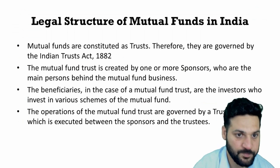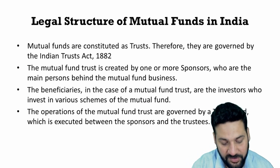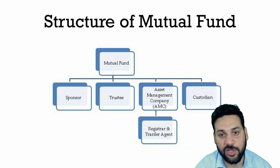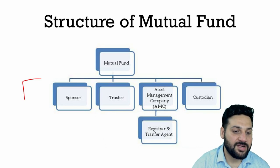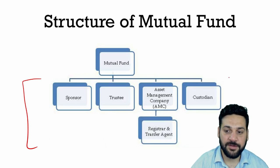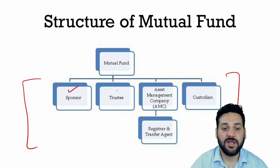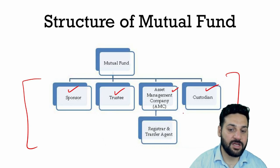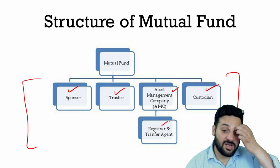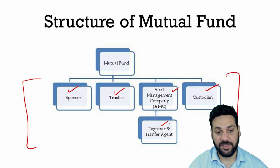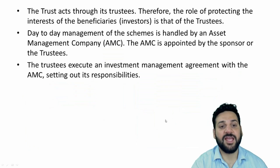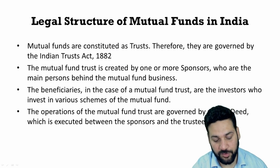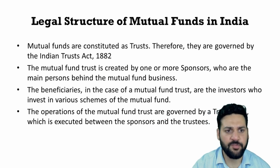Let's start with the legal structure of mutual fund. It is basically a two-tier structure. There is a sponsor, then there is a trustee, an asset management company, a custodian, and the RTA — registrar and transfer agents. The sponsor is the one who actually starts the mutual fund.